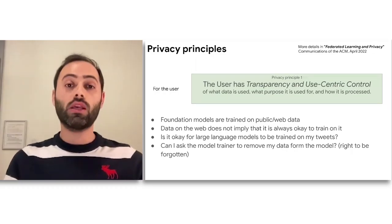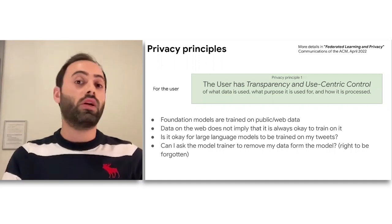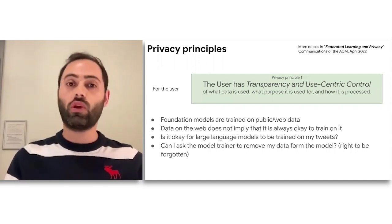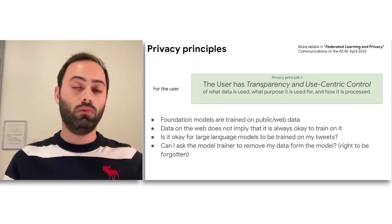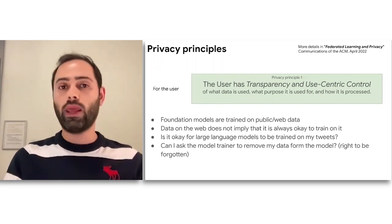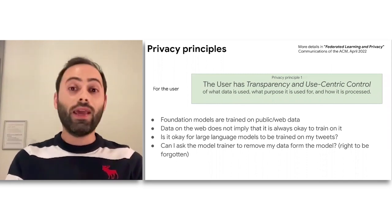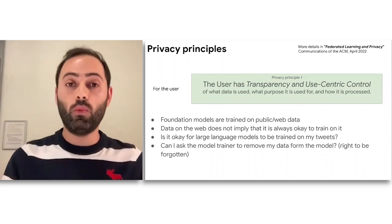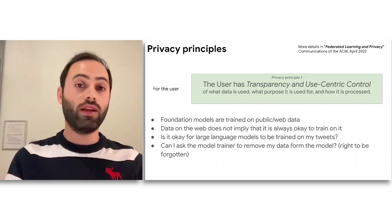For example, since we're talking about foundation models, a lot of these foundation models are actually trained on public or web data — you've scraped the web, Twitter, Wikipedia, etc. Is that okay? Just because the data is on the web, does it mean that these models are allowed to be trained on it? Maybe in some cases yes, because we're training on data that's benign, such as Wikipedia articles. But maybe in other cases, if somebody makes a tweet and says something a little controversial, they don't want the information of that tweet to be captured by ChatGPT and then broadcast to hundreds of millions, if not billions of people at scale.